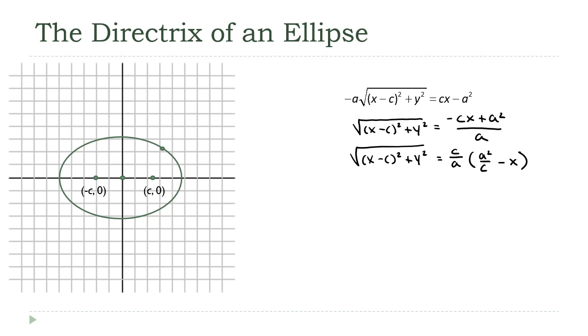This expression on the left-hand side, this is the distance from a point on the ellipse, x comma y, to the focus, to the focal point down here at c comma 0.